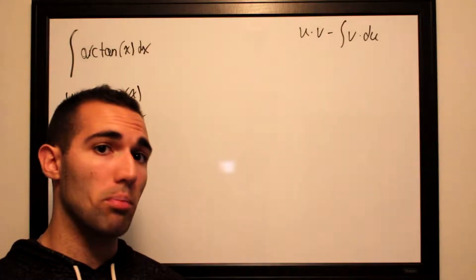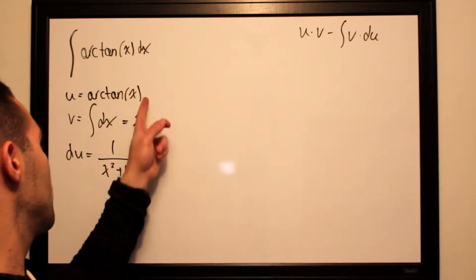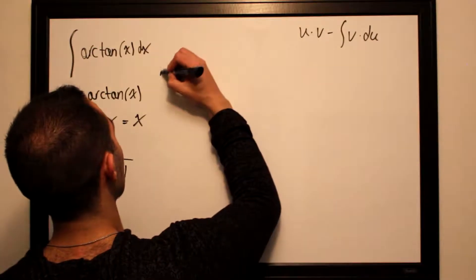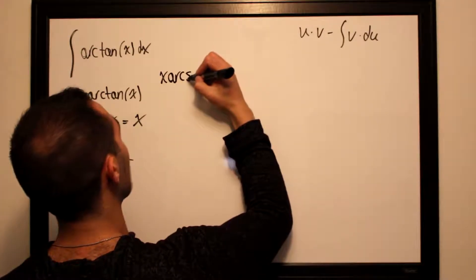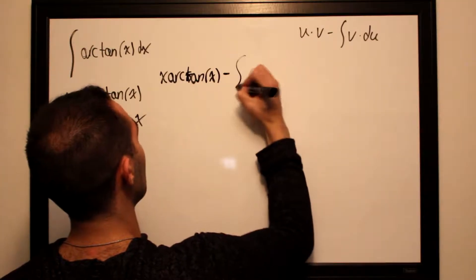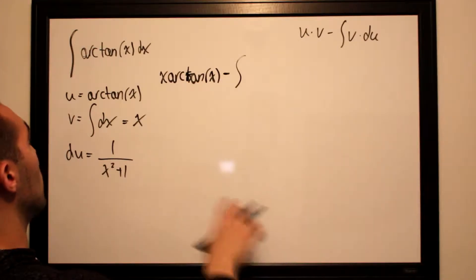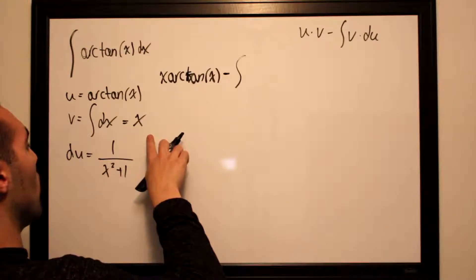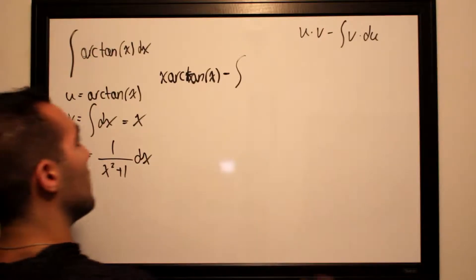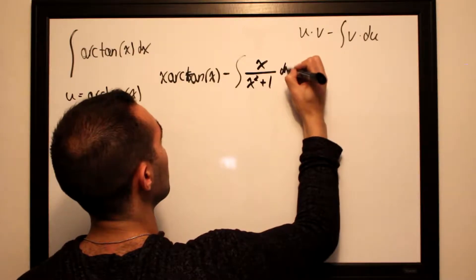Now we start plugging things into their place in the integration by parts formula. u times v minus the integral of v times du. u times v will be x times arctan x minus the integral of v times du. Our v is x and our du is 1 over x squared plus 1 dx, so this becomes x over x squared plus 1 dx.